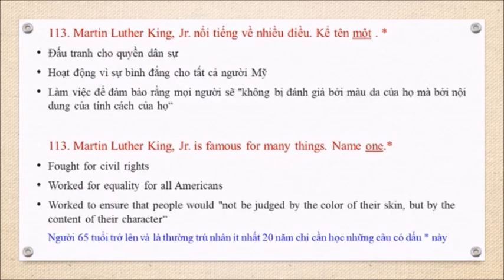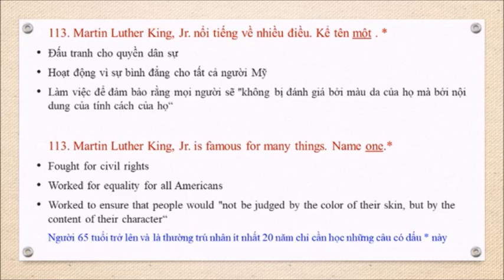Question 113: Martin Luther King Jr. is famous for many things. Name one. Fought for civil rights. Worked for equality for all Americans. Worked to ensure that people would not be judged by the color of their skin, but by the content of their character.